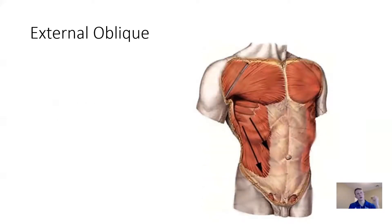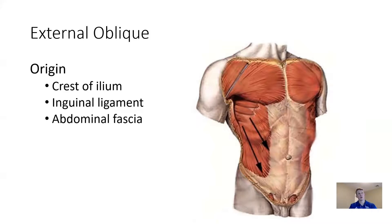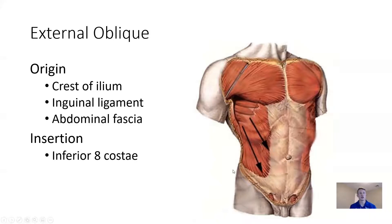Moving on to external oblique — it is the most superficial of these abdominal muscles. It has its origin on the iliac crest and up the inguinal ligament onto the abdominal fascia, and then an insertion on the inferior eight costal ribs.